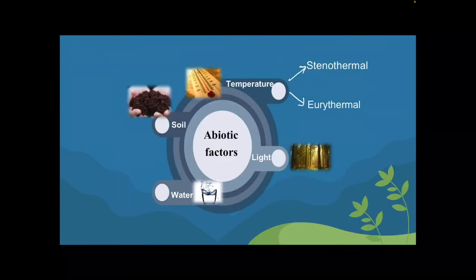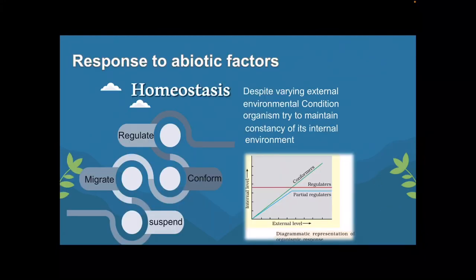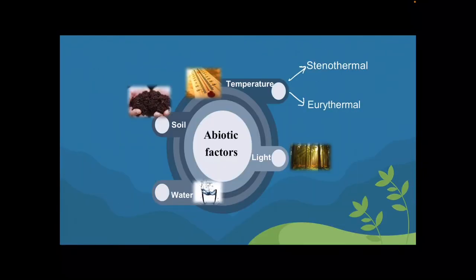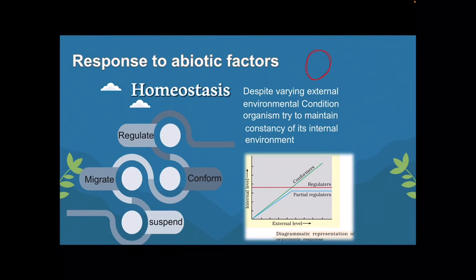Now let's see how organisms cope with drastic changes in abiotic factors — this is about homeostasis. When temperature or soil pH increases or decreases, organisms have the tendency to maintain their internal environment. An organism has its own internal environment — blood levels, sugar levels, internal organs — that it must regulate.